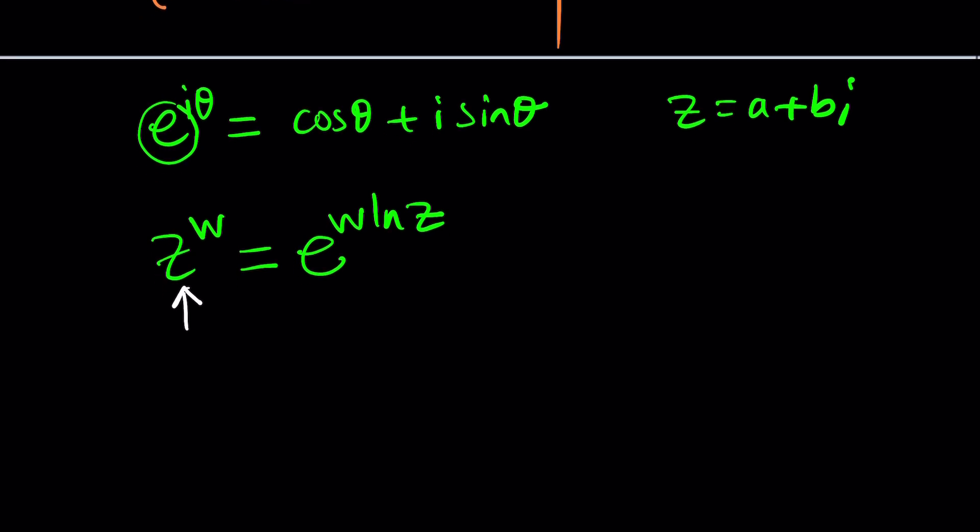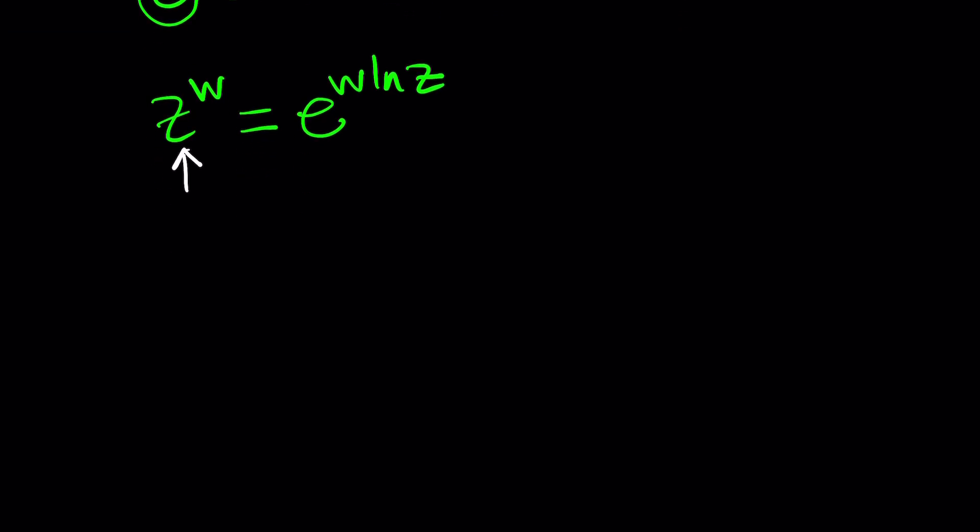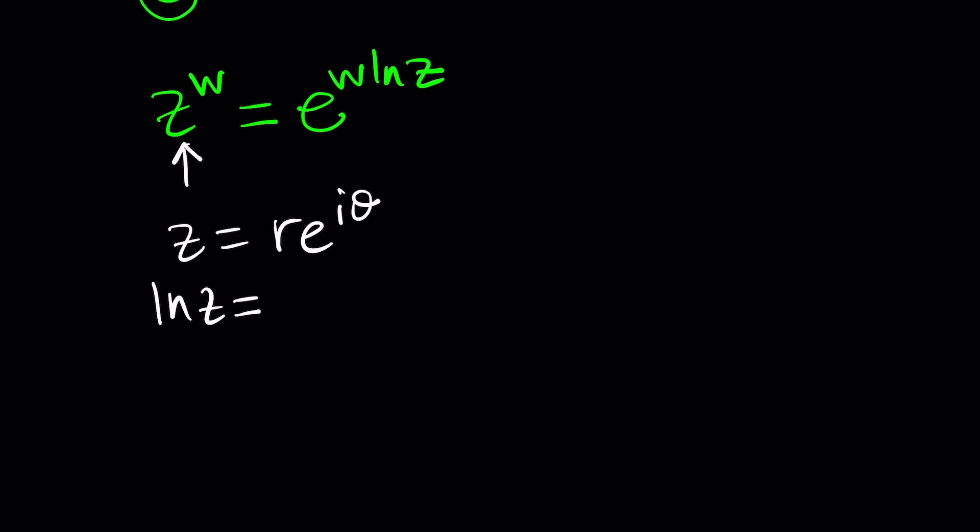So one thing to keep in mind though, how do you find ln of a complex number? So when it comes to ln of a complex number, since z can be written as r e to the i theta, then ln z can be expressed as ln r plus i theta. But here's a couple things you need to be careful about.